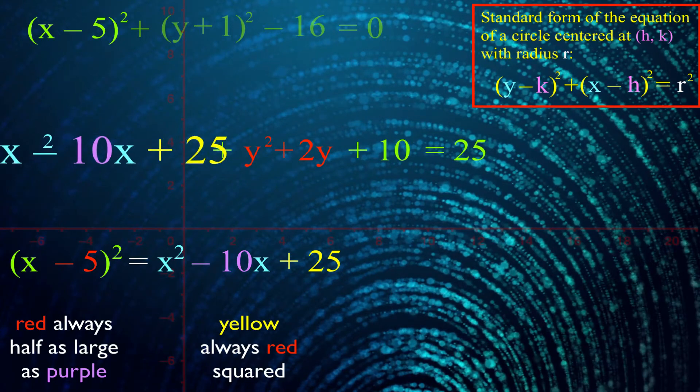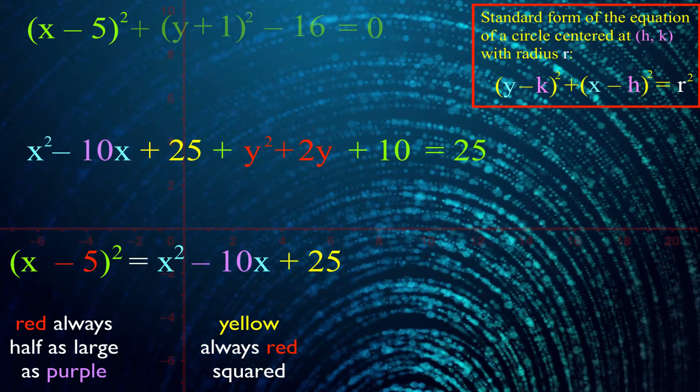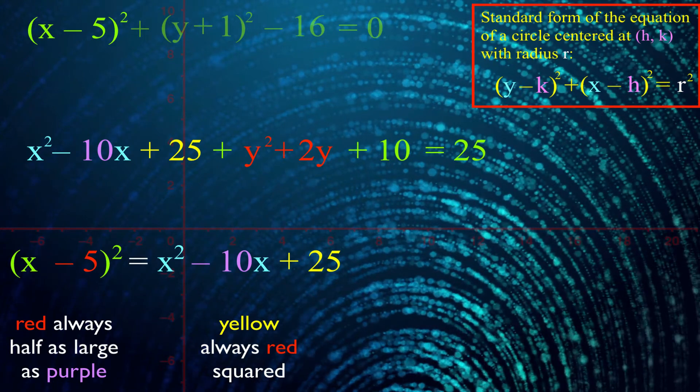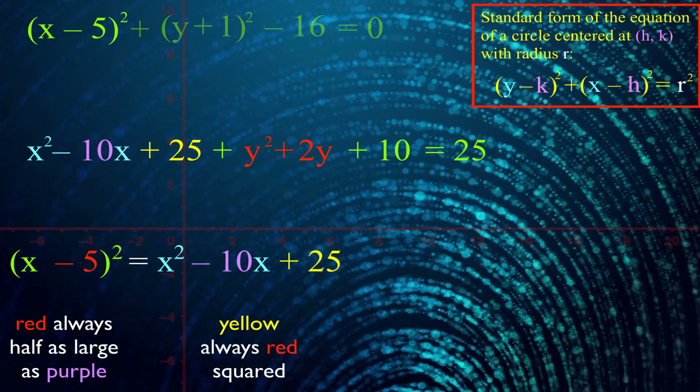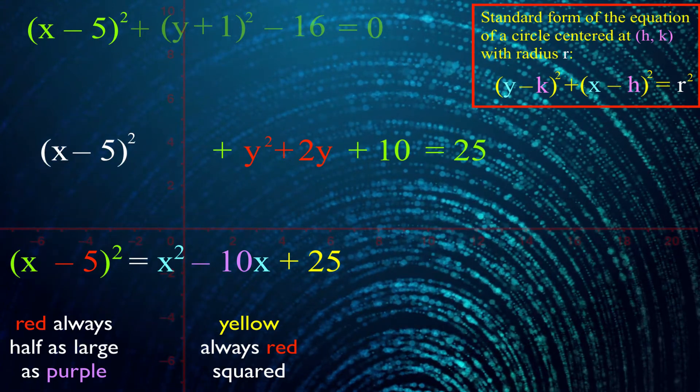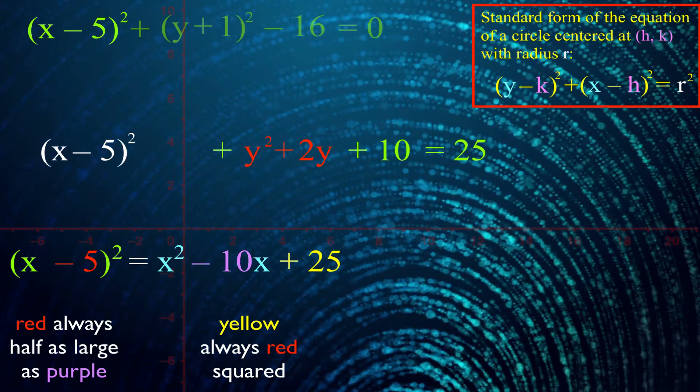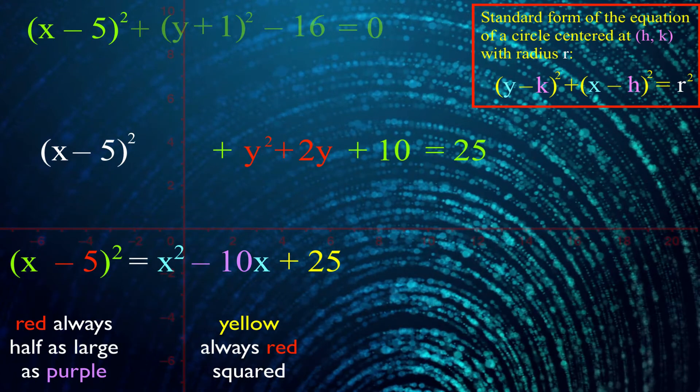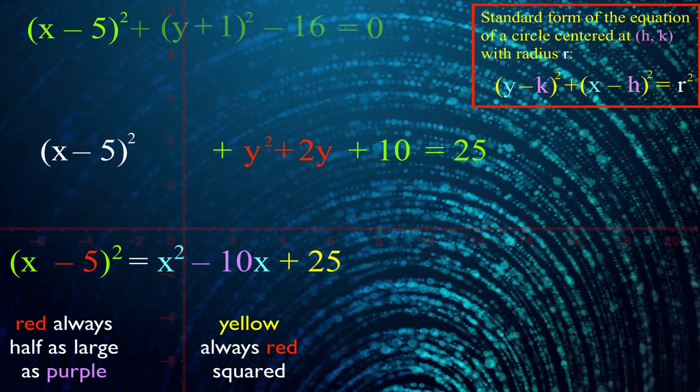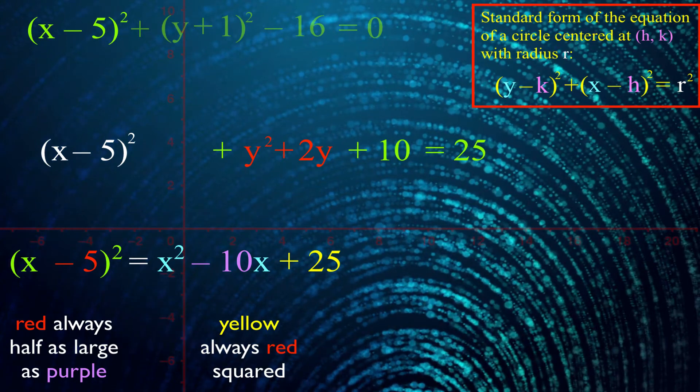Now on the left, I have x squared minus 10x plus 25, which my puzzle told me was the exact same as x minus 5 squared, so I can replace the x squared minus 10x plus 25 with x minus 5 squared. Why would you do such a thing? Well, maybe right now you should focus more on how instead of why, but the short answer for why is because rewriting these terms as something squared gets it one step closer to being into our standard form.